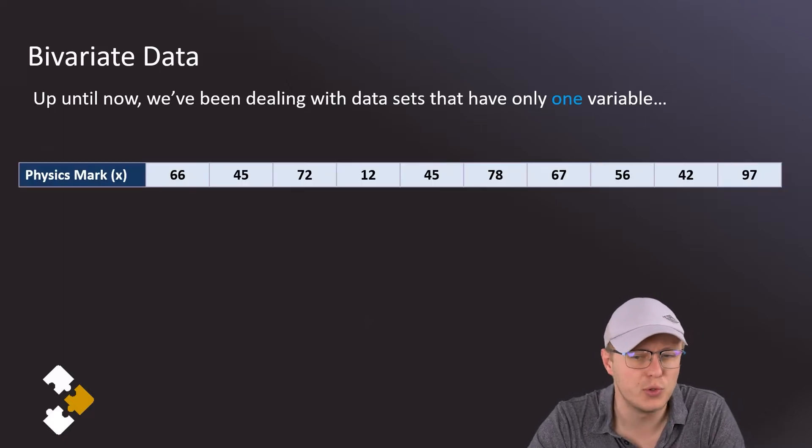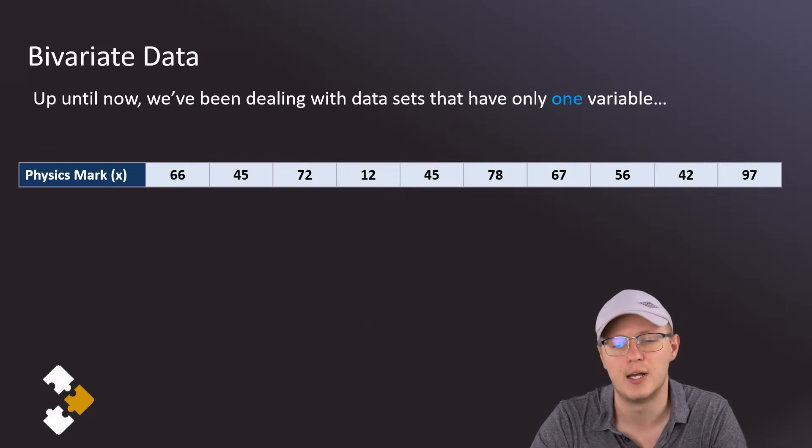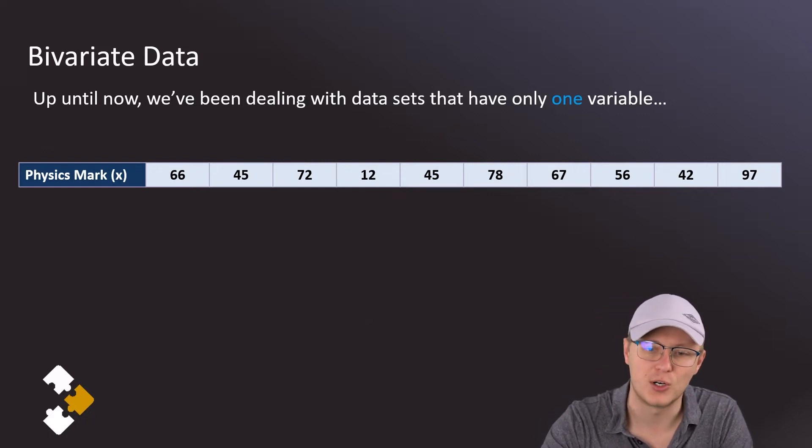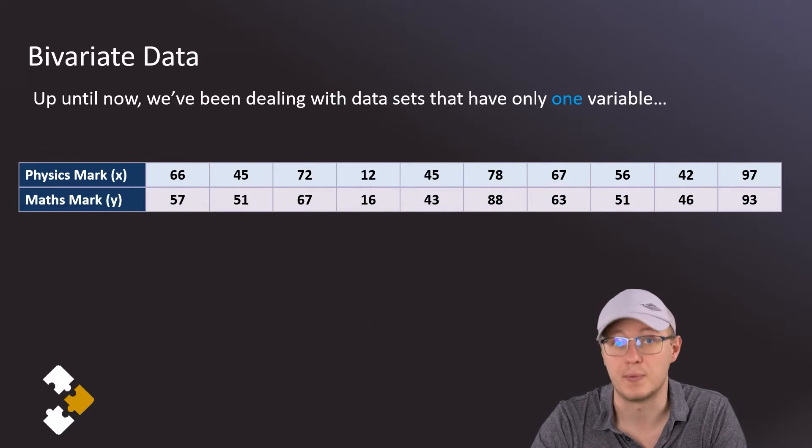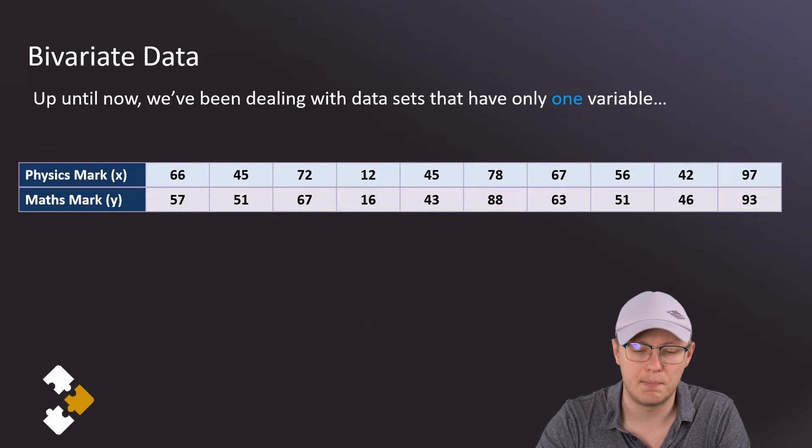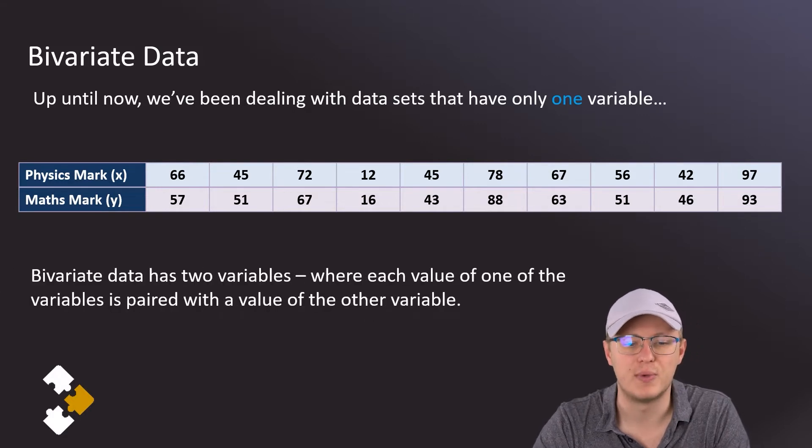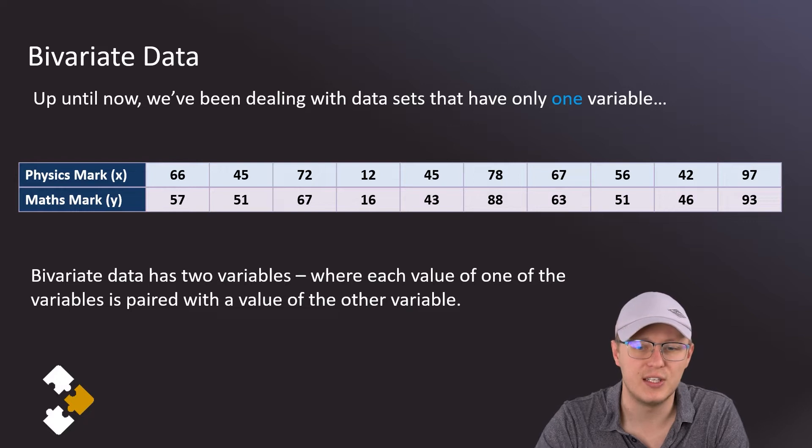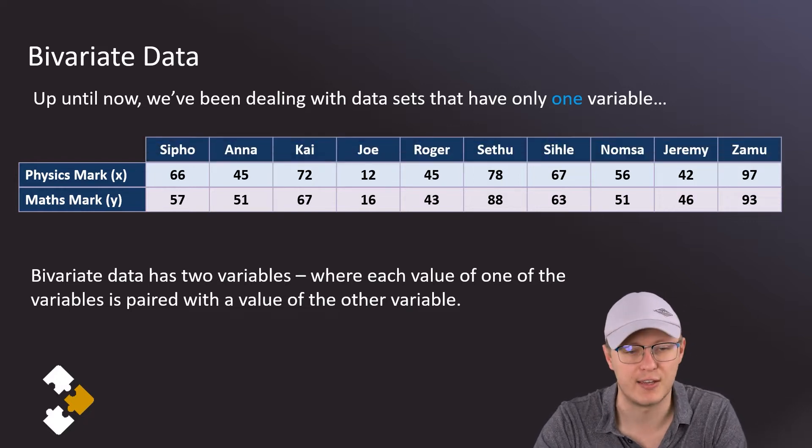Let's say, for example, we record the physics marks and we call this the x variable. Now instead of just recording physics marks, we might go and record maths marks as well, and these x y pairs are going to be the bivariate data. What's important is that these values are paired together.